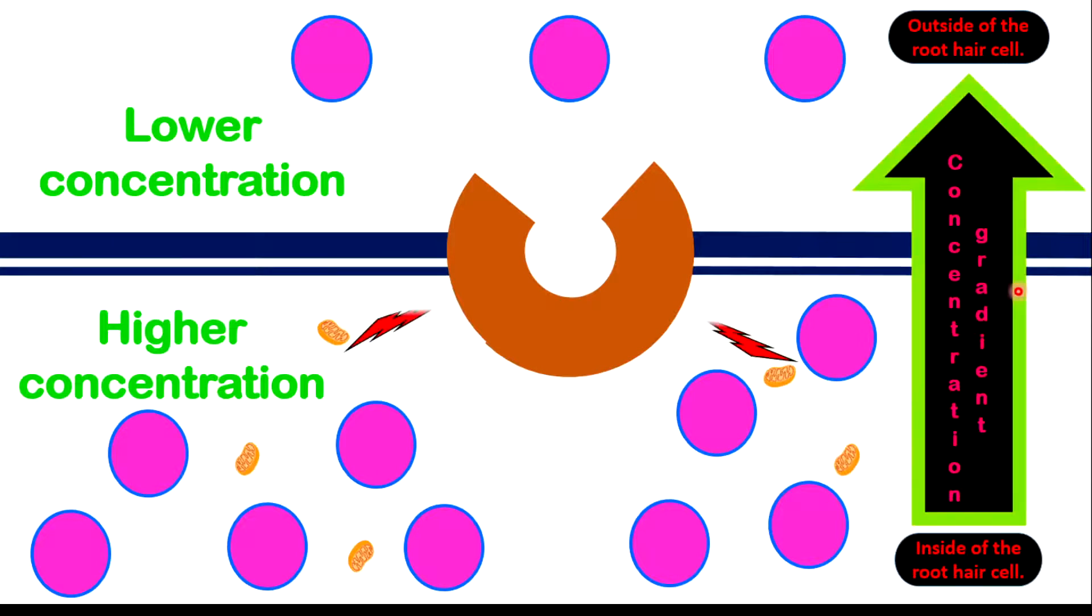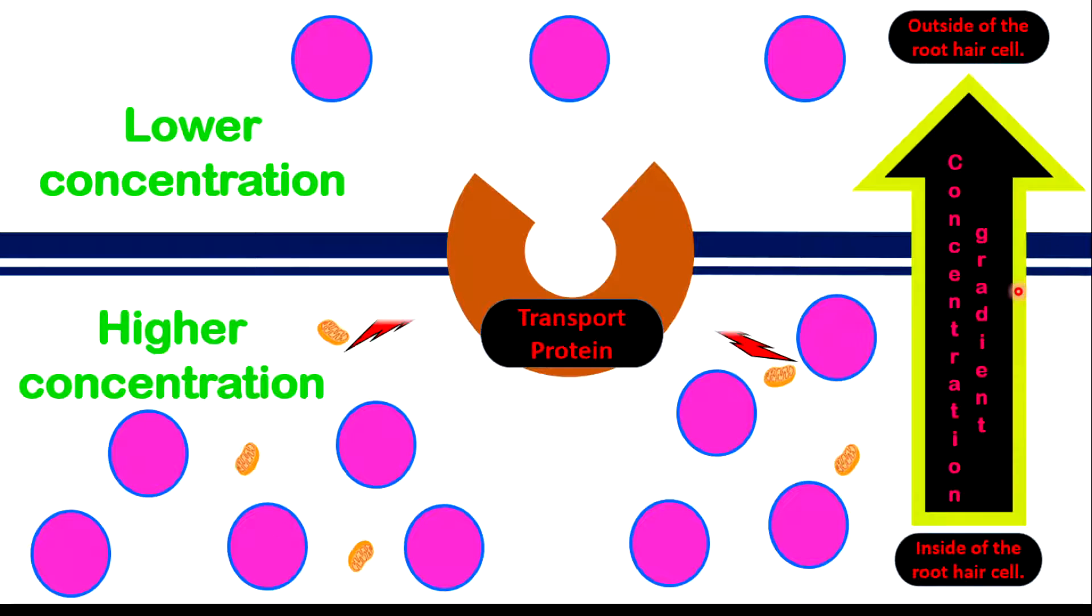For active transport to take place, there are some special proteins called transport proteins. These proteins will require energy to carry out their action because movement is involved. The dark blue lines represent the cell wall and cell membrane of the root hair cell.